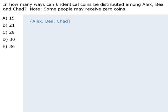We'll begin with the case where Alex receives 6 coins, then 5, then 4, and so on. If Alex receives all 6 coins, then there are 0 coins remaining, which means B and Chad must each receive 0 coins. So there is only one possible outcome when Alex receives 6 coins.